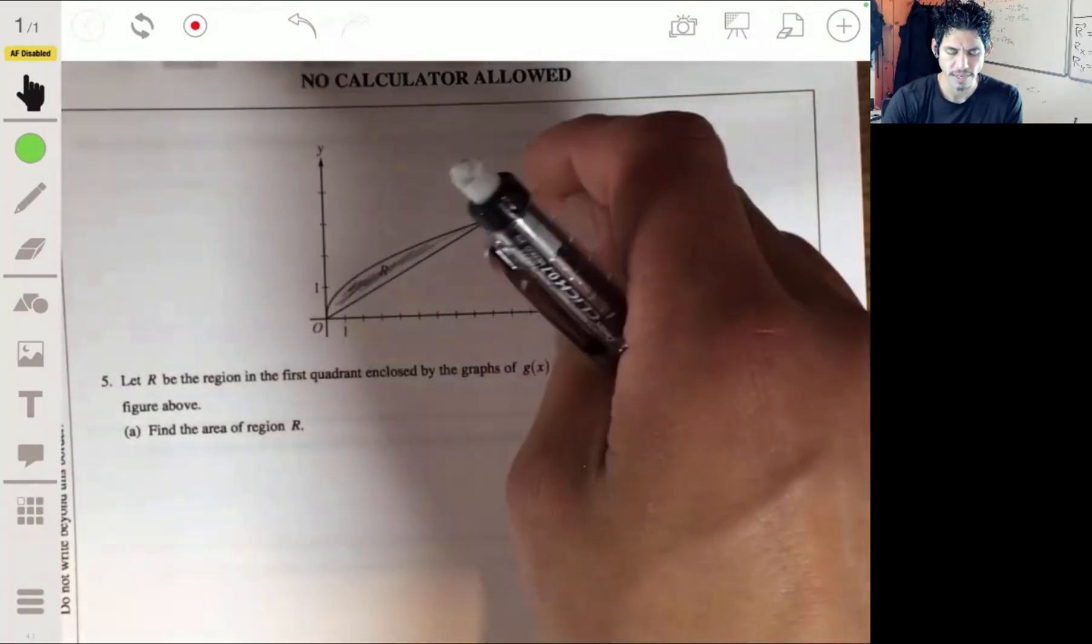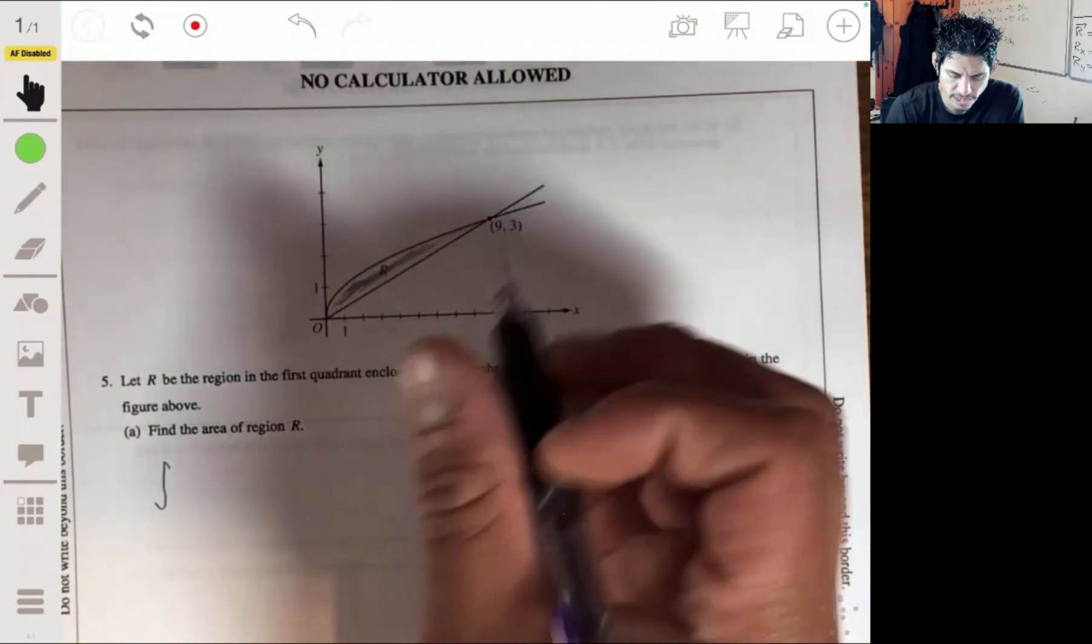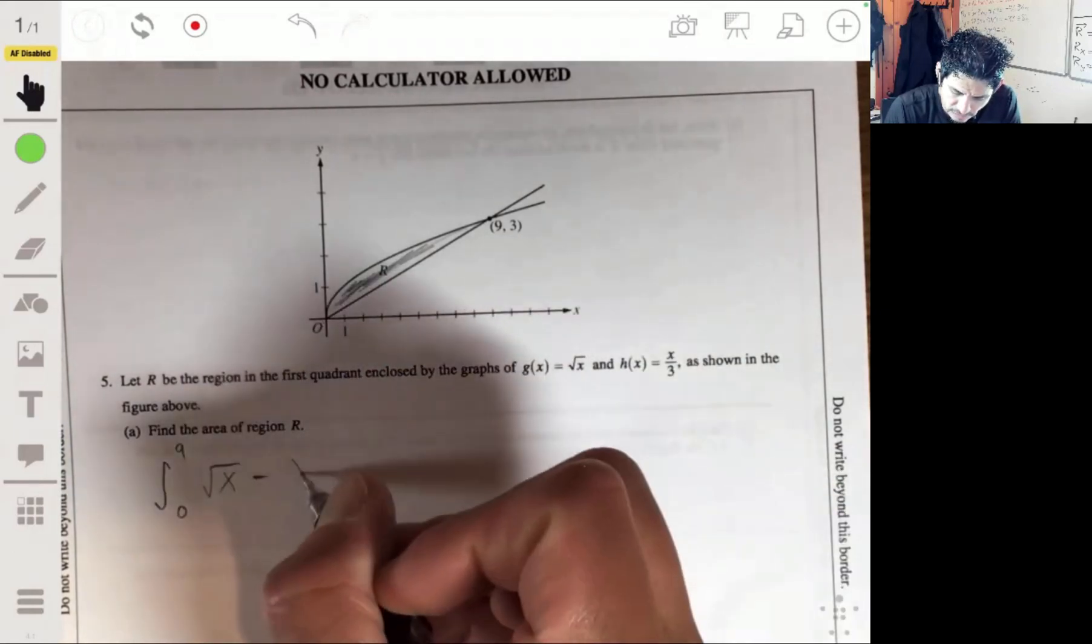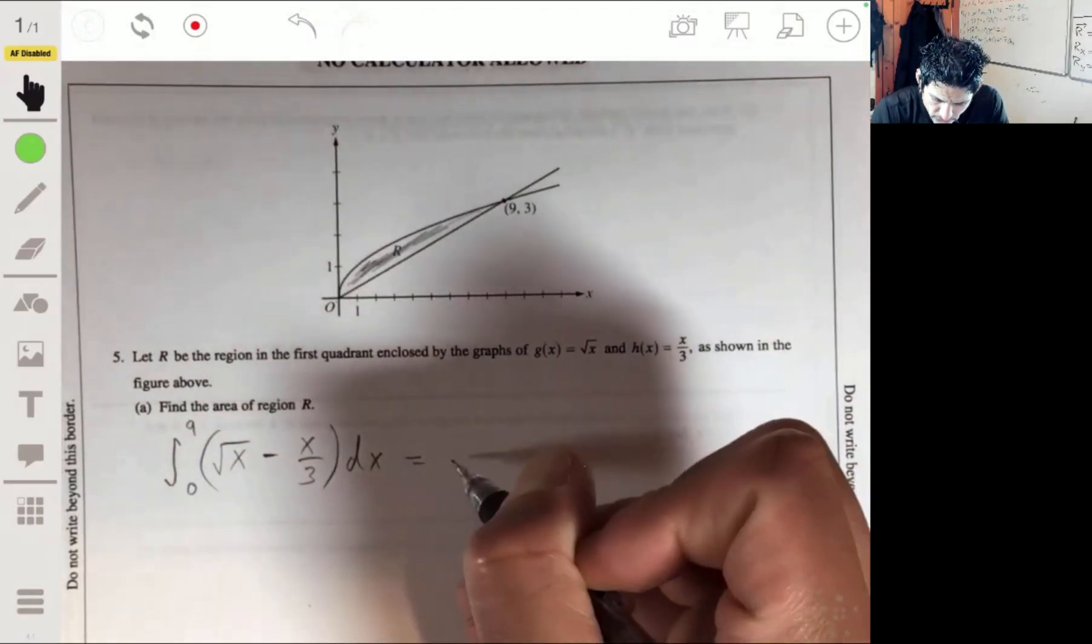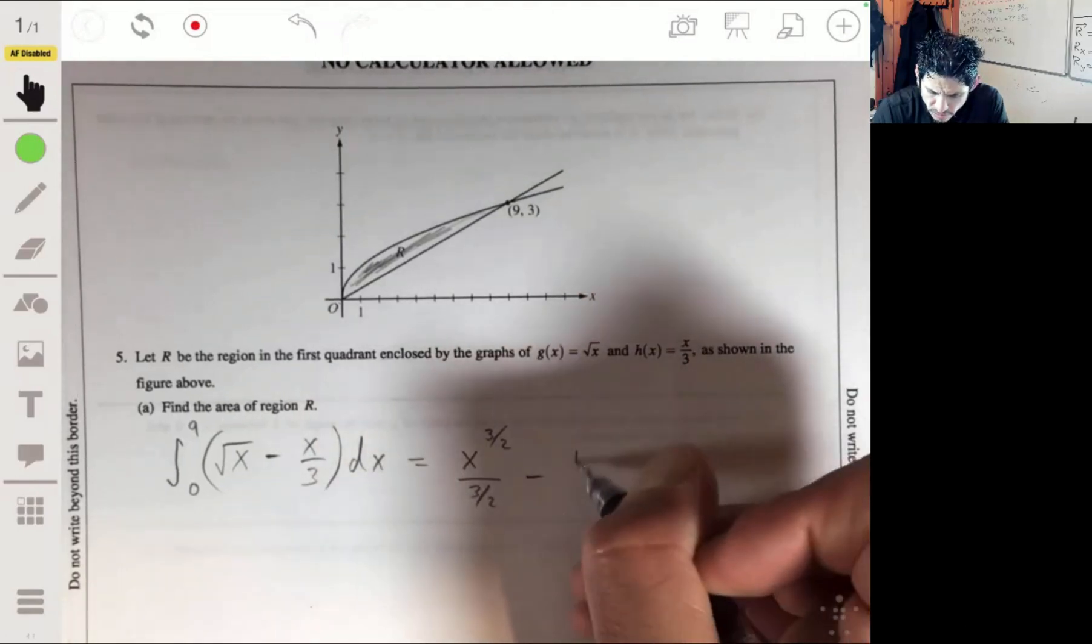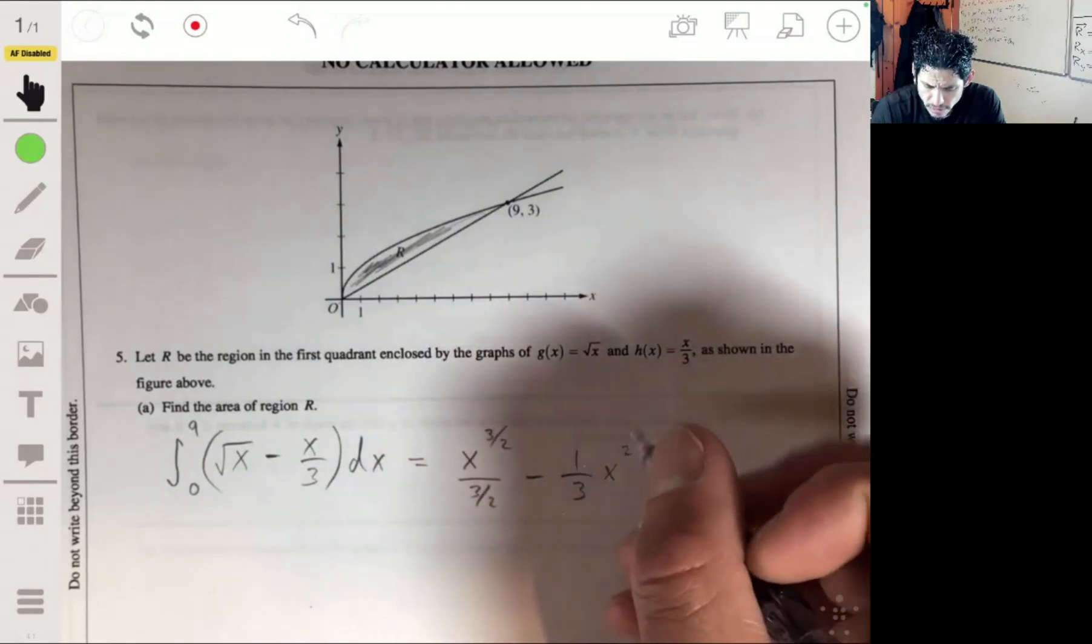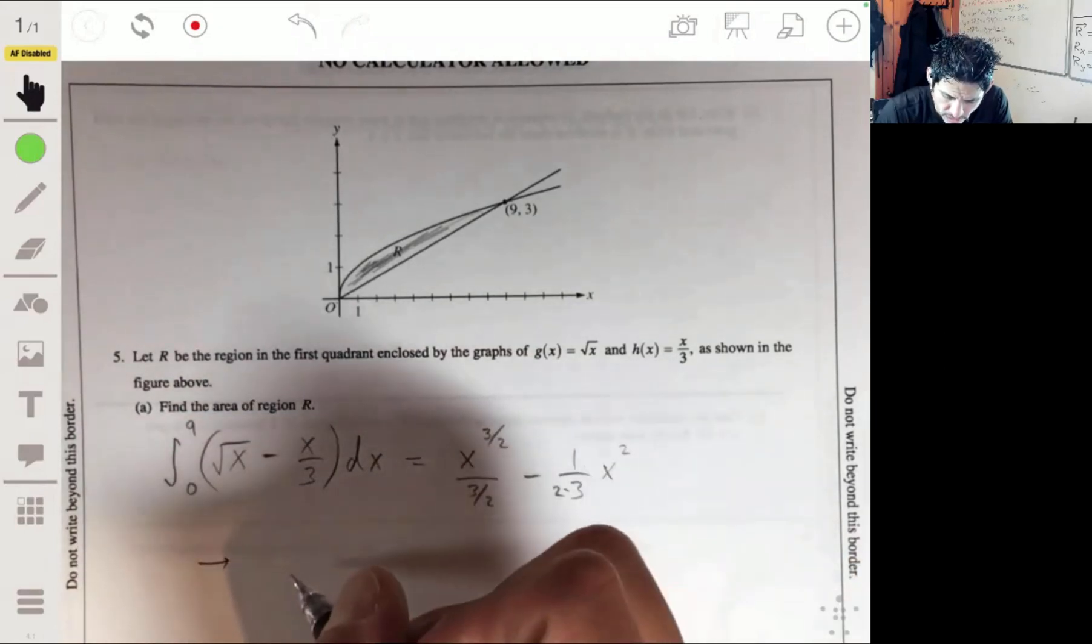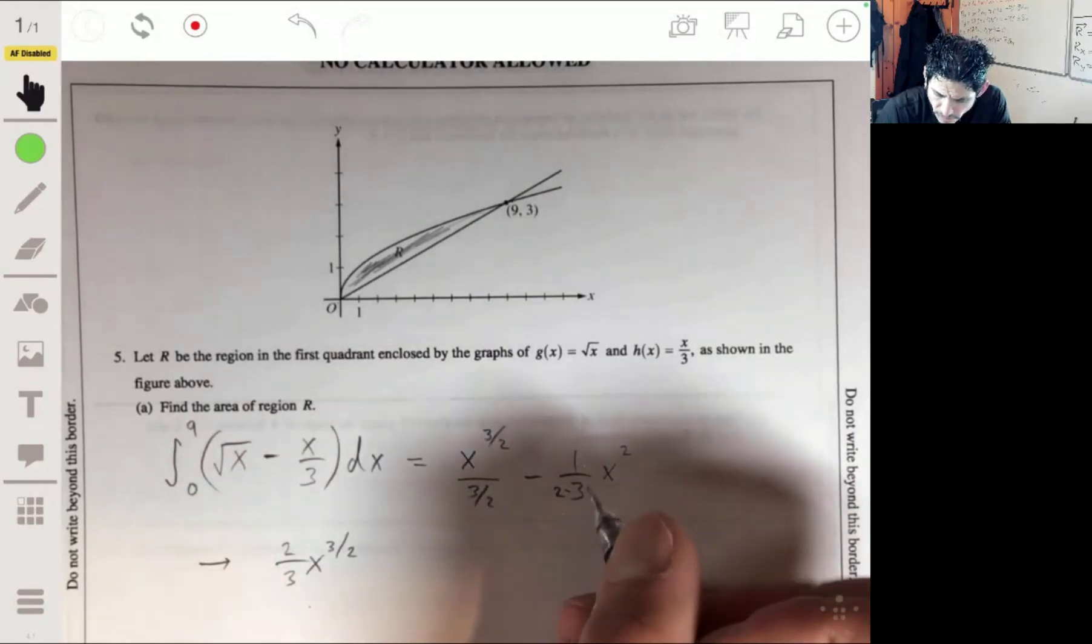Okay, so this is going to be just your basic top function minus the bottom function, integrating from 0 to 9. So we're going to have the square root of x minus x over 3, or 1/3 x, and then we just integrate this. We'll get x to the 3/2 power over 3/2 minus 1/3 x squared over 2. To simplify this, we'll have 2/3 x to the 3/2 minus 1/6 x squared.